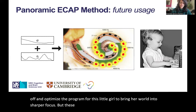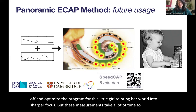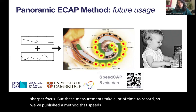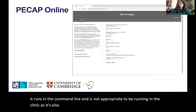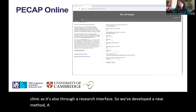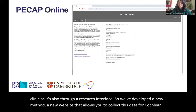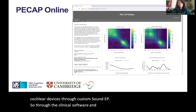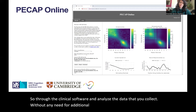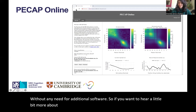But these measurements take a lot of time to record. We've published a method that speeds up this process to eight minutes, but it runs in the command line and is not appropriate to be running in the clinic because it's also through a research interface. So we've developed a new website that allows you to collect this data for cochlear devices through Custom Sound EP — through the clinical software — and analyze the data that you collect without any need for additional software. So if you want to hear a little bit more about that, come check out my talk.